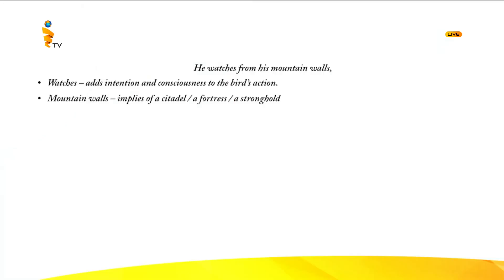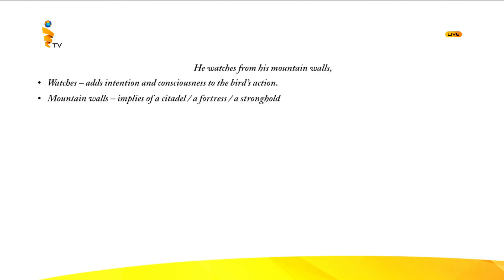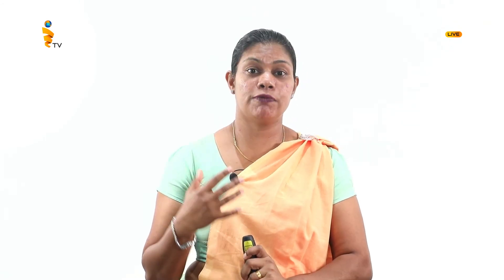He watches from his mountain walls. The dwelling of the bird is this mountain cliff — his mountain walls. The entire mountain belongs to the bird, which is why the poet has used the possessive pronoun 'his.' It also creates a picture of a fortress, a citadel — this is the citadel of this monarch, the eagle. The bird watches — here we see personification again. The word 'watches' denotes intention and consciousness of an alert, watchful human. The bird is not watching randomly or aimlessly but focusedly — the eagle is focused and resourceful.